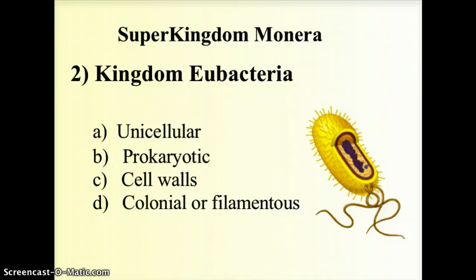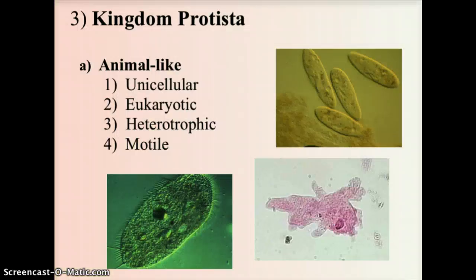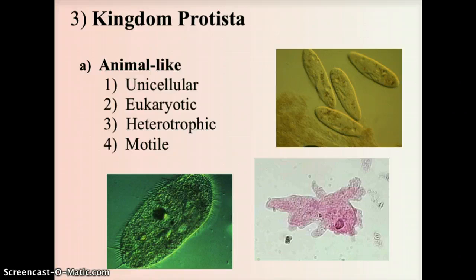The kingdom Protista has been divided into three subgroups. The animal-like protista are unicellular eukaryotes, meaning they have an organized nucleus that houses genetic material. They are heterotrophic — they must find their food from an outside source and bring it into their bodies. They are also typically motile, meaning they have the ability to move.